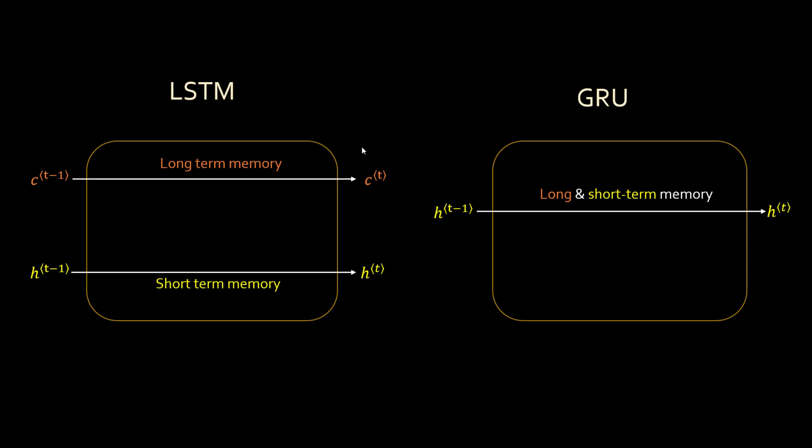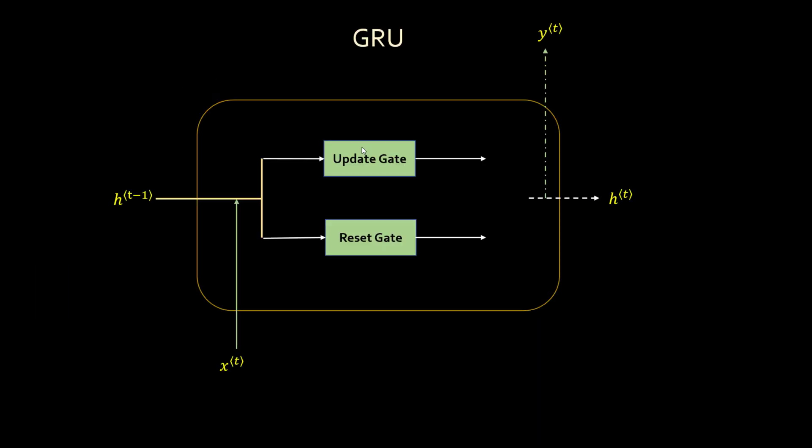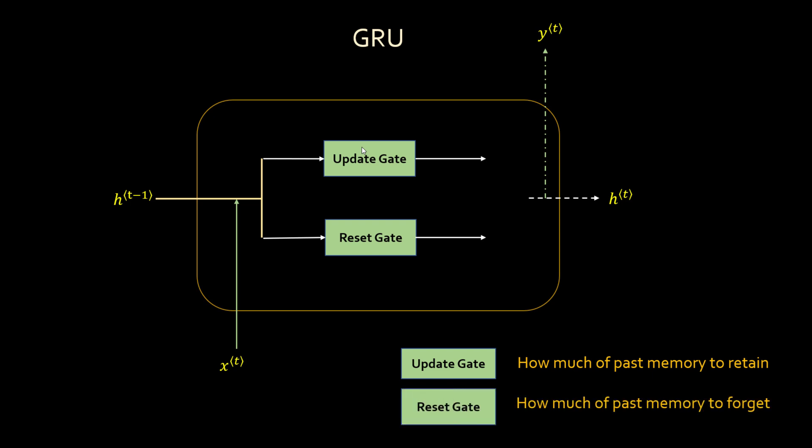The basic difference is that LSTM has two states — cell state and hidden state — whereas GRU has only a hidden state, which combines both long and short-term memory. If you look inside the GRU box, it has two gates. LSTM had three gates: input, output, and forget. GRU has only two gates: an update gate and a reset gate. The update gate knows how much of past memory to retain, whereas the reset gate knows how much of past memory to forget. They sound a little similar, but there is a subtle difference, which we'll look at using an example.